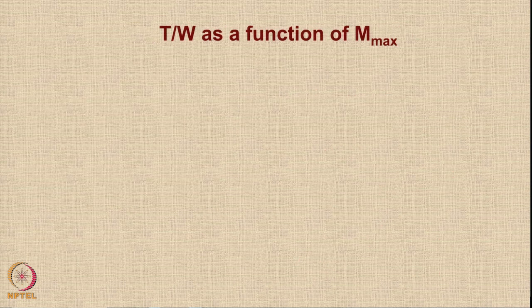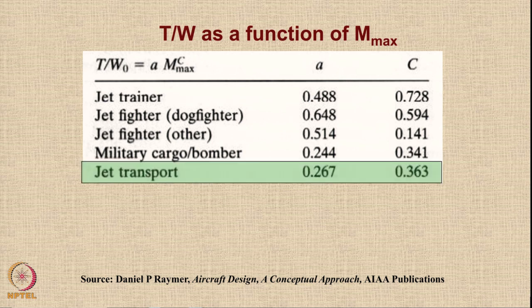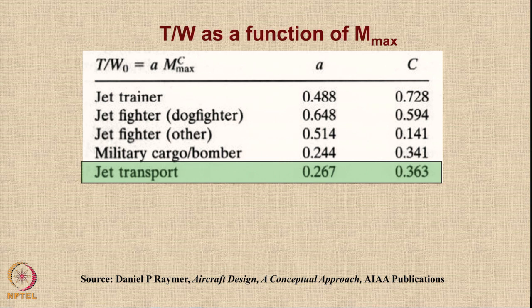Dan Raymer also provides a better estimate for T/W as a function of maximum Mach number. For jet transport aircraft, T/W₀ = A × M_max^C, where A = 0.267 and C = 0.363. For Boeing 787-8, the maximum Mach number is 0.9, so the calculation is simply 0.267 × 0.9^0.363.